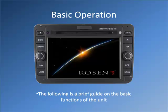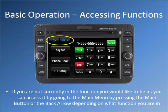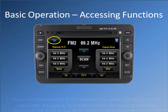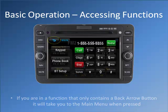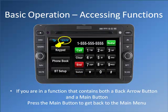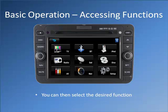The following is a brief guide on the basic functions of the unit. If you are not currently in the function you would like to be in, you can access it by going to the main menu by pressing the main button or the back arrow, depending on what function you are in. If you are in a function that only contains a back arrow button, it will take you to the main menu when pressed. If you are in a function that contains both a back arrow button and a main button, press the main button to get back to the main menu. You can then select the desired function.